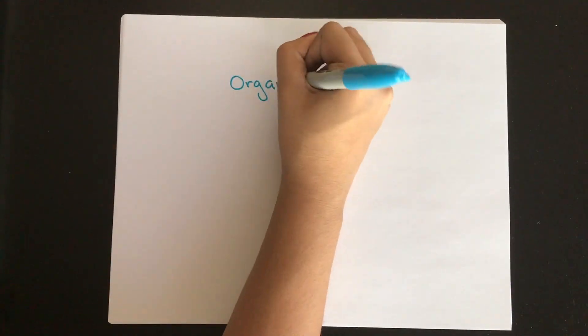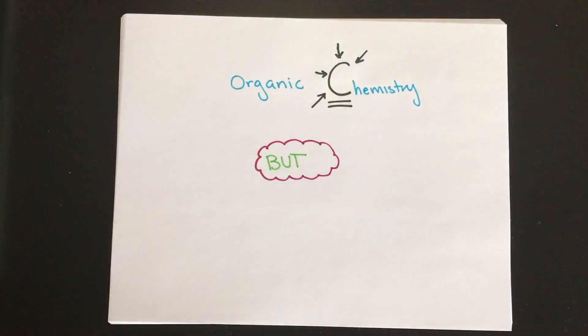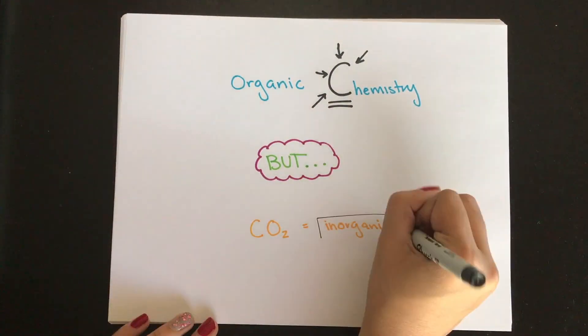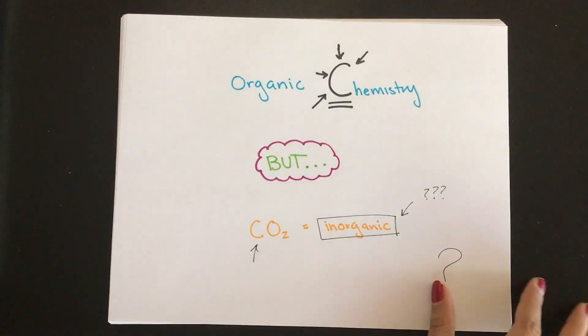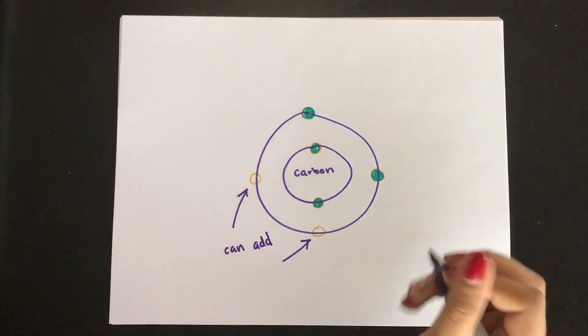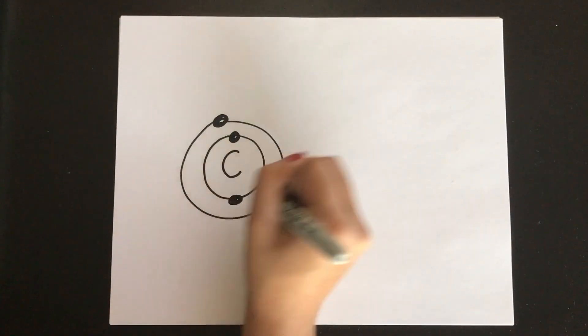Next, we're going to talk about organic chemistry, which is the chemistry of molecules with carbon. Any other type of molecule is known as an inorganic molecule, except for carbon dioxide, which is considered inorganic. Carbon is super common because it has four valence electrons. This allows carbon to gain or lose four electrons, and it can form up to four bonds.